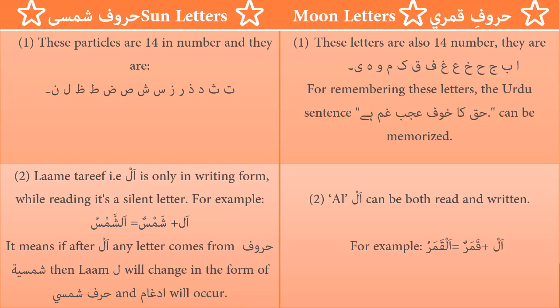The moon letters — huruf qamariyya. These letters are also fourteen in number and they are: alif, ba, jim, ha, kha, 'ayn, ghayn, fa, qaf, kaf, mim, waw, ha, ya. For remembering these letters, the Urdu sentence 'ha ka khawf 'ajab gham ha' can be memorized — you will find all fourteen letters in this sentence.